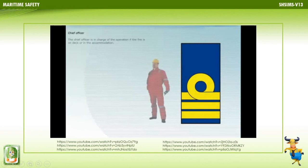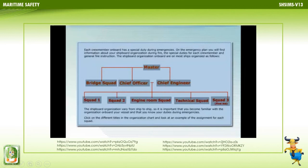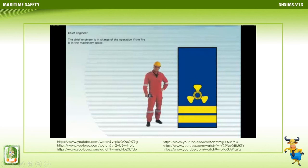The chief officer is in charge of the operation if the fire is on deck or in the accommodation, and reports to the master as soon as he arrives on the scene. The chief engineer is in charge of the operation if the fire is in the machinery space, and also reports to the master as soon as he arrives on the scene.